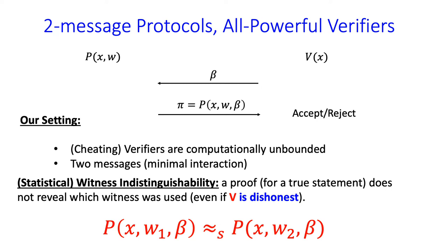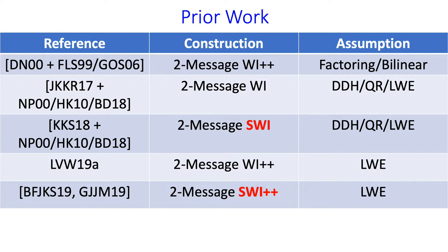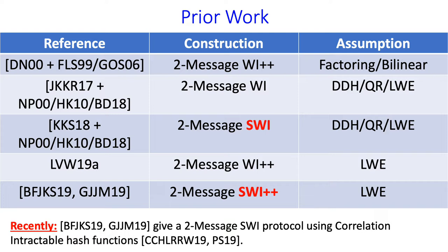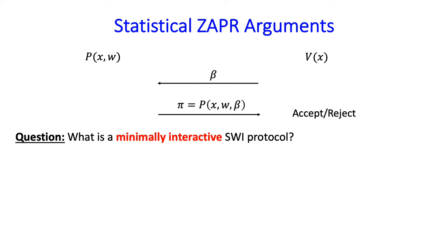So a proof reveals nothing about which witness out of a pair was used. Two-message WI protocols have been studied fairly extensively in the past. They were originally constructed by Dwork and Naur under the factoring assumption, and since then there have been constructions under the DVH assumption, the QR assumption, and the LWE assumption. I specifically want to mention recent works that give a two-message statistically witness indistinguishable protocol using a framework based on correlation intractable hash functions, all based on the LWE assumption. Some of these works have a plus-plus notation indicating they satisfy nicer properties beyond just being a two-message WI protocol.